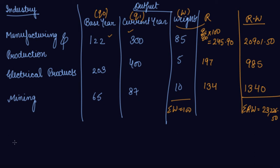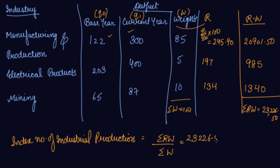We get summation RW as 23226.50, and the summation W we have 100. So we can find out the index number of industrial production, which is equal to summation RW divided by summation W. So 23226.50 divided by 100, which gives you 232.27 approximately.